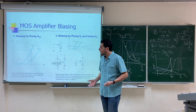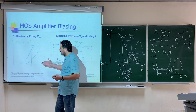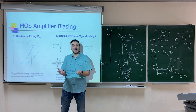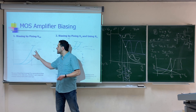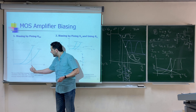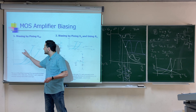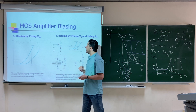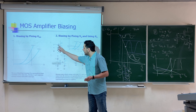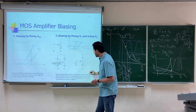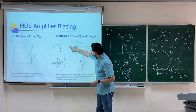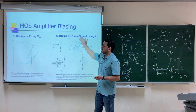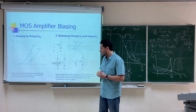Practically speaking, if you buy two devices of the same type, there will be a difference in characteristics. If you fix VGS, the difference between the two biasing currents is very big. But with the second biasing technique — fixing VG and adding RS — the difference between the two currents is very small. That's why the second biasing technique is much better than the first.